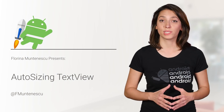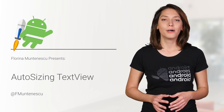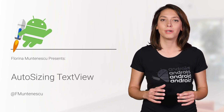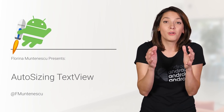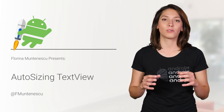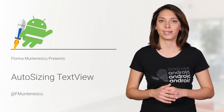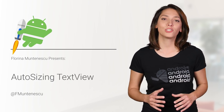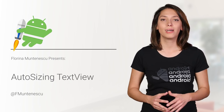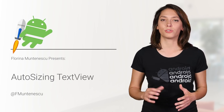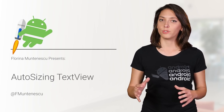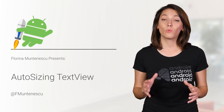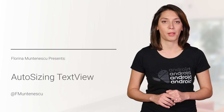For best user experience with text, Material Design recommends using dynamic type instead of smaller type sizes or truncating larger size text. We made this much easier to implement with the introduction of TextView autosizing. Let's see how to use it, how to customize it, and what caveats you need to be aware of.